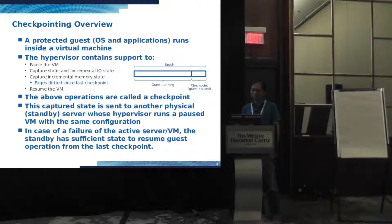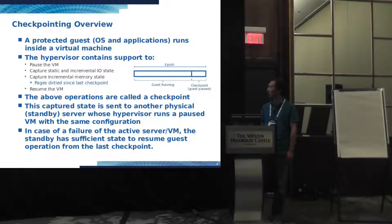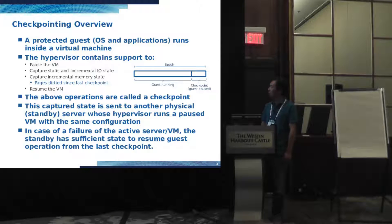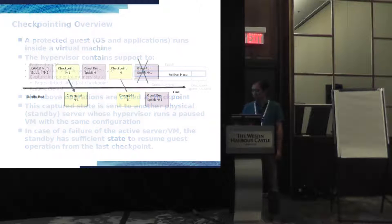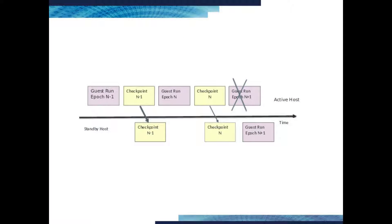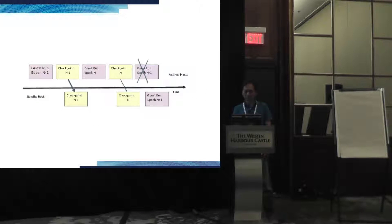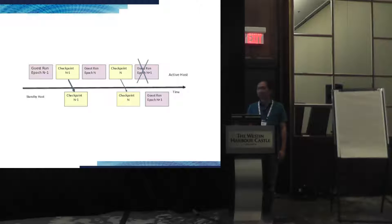You periodically pause the VM, and that period is what we call an epoch. Within the epoch, the guest will run for a period of time, then go into a checkpoint state where it's paused. This is a simple diagram of a checkpointing system where the guest runs through epochs, and each epoch transfers the states from the active host to the standby host.